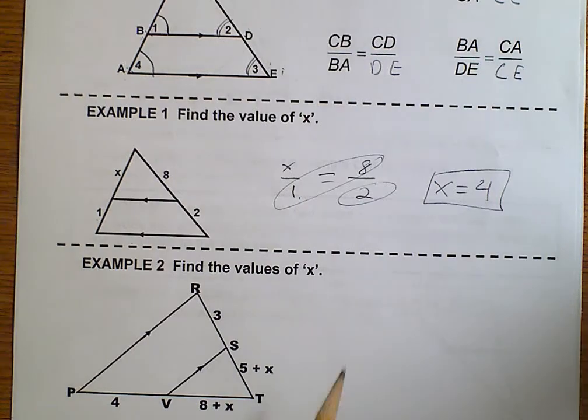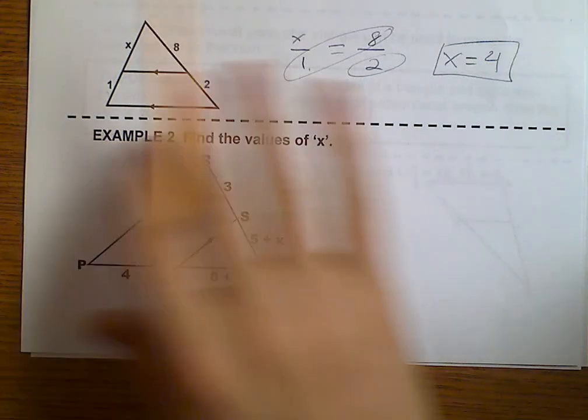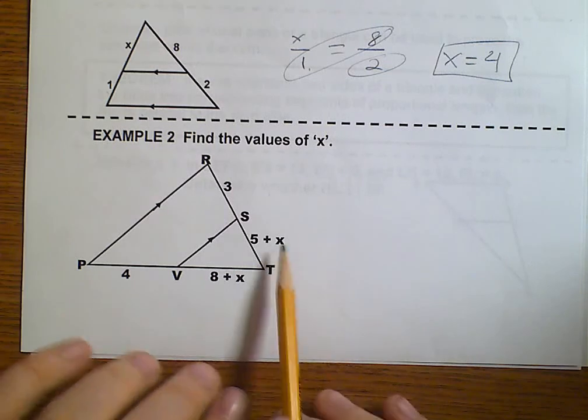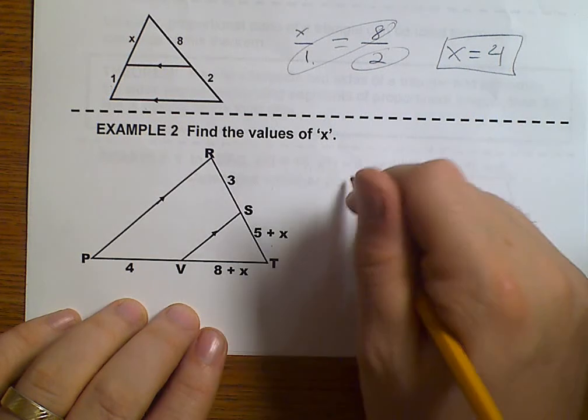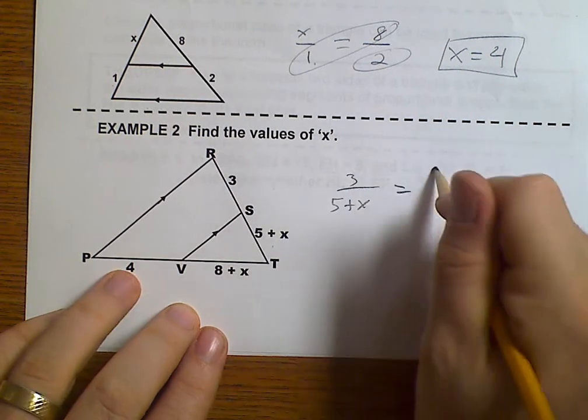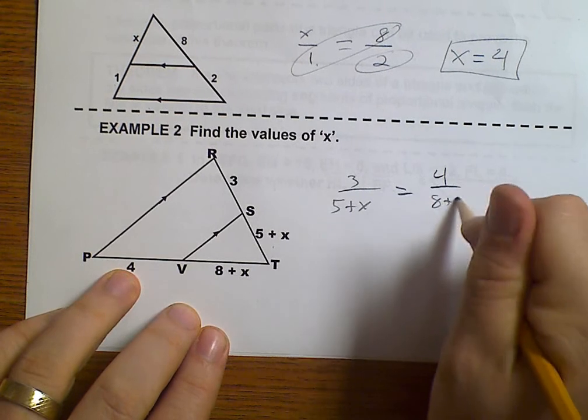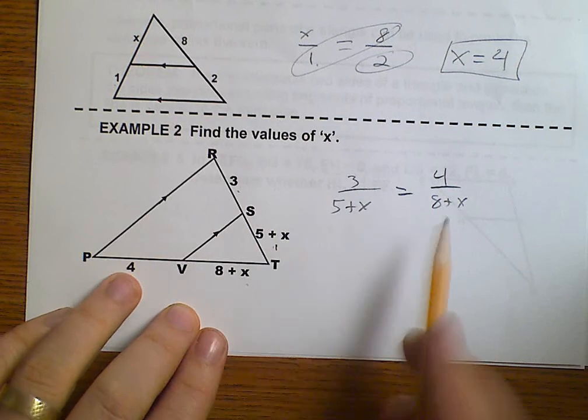Take a look at example number 2. Same thing, but they've turned the triangle around for us. So we're going to set this up as 3 over 5 plus X is equal to 4 over 8 plus X. This one over that one equals this one over that one.